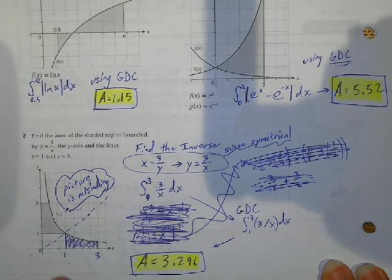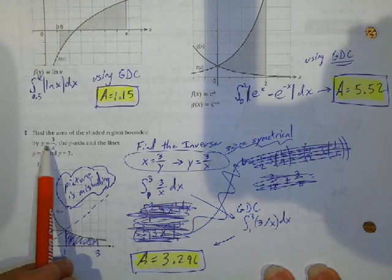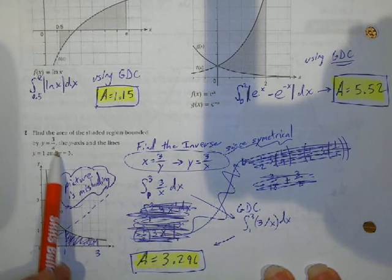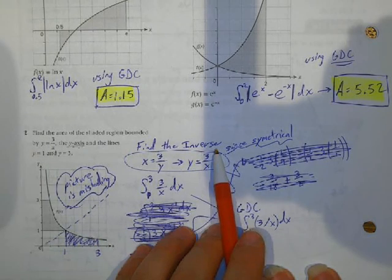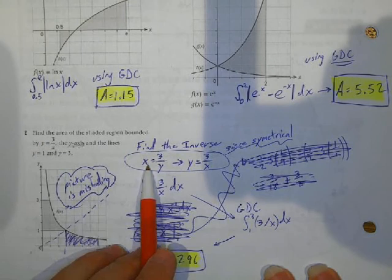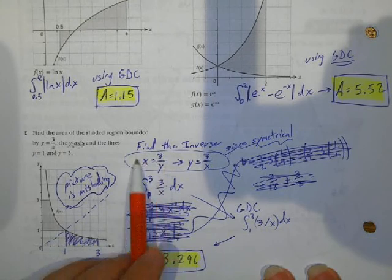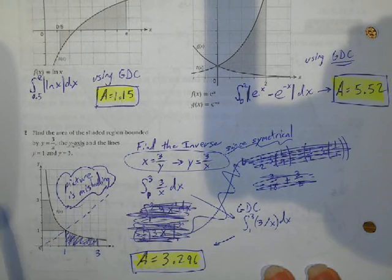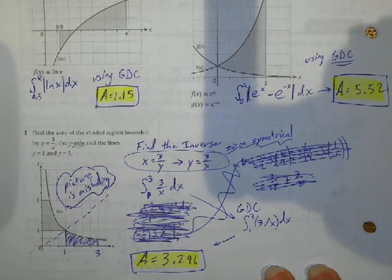Here's another one where it's bounded by the y-axis. Find the area of the shaded region bounded by y equals 3 over x and the y-axis. Once again, if we're bounding with the y-axis, I first need to find the inverse function. If I've got y equals 3 over x, I switch y into x and x into y. Interestingly, if you cross-multiply and rearrange, you still get the same thing — this function is symmetrical. We're doing it between y equals 1 and y equals 3.